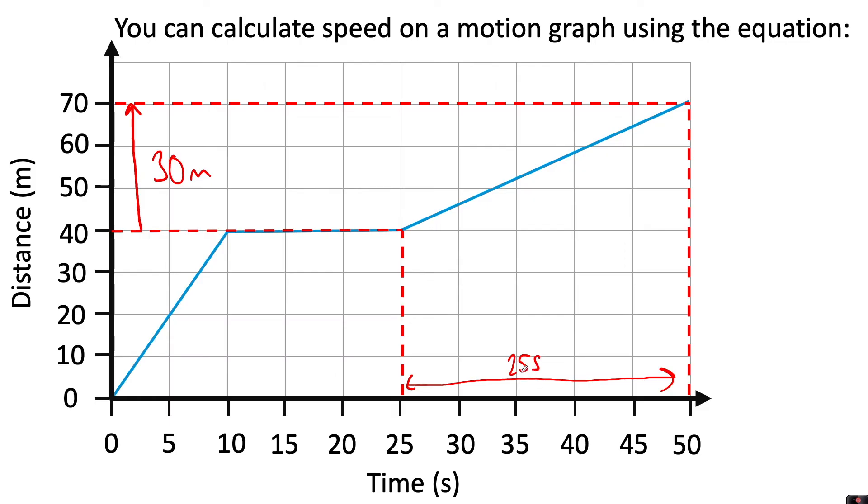So to calculate the speed of the rhino in this section, it would be 30 meters divided by 25 seconds, which would be 1.2 meters per second.